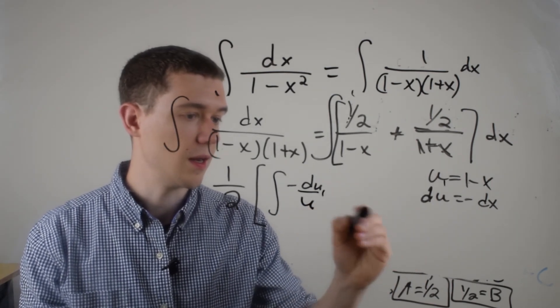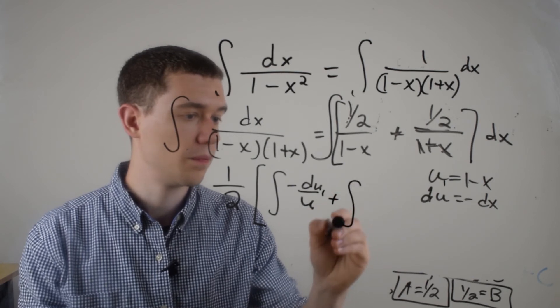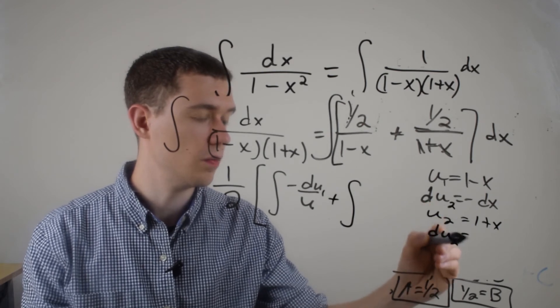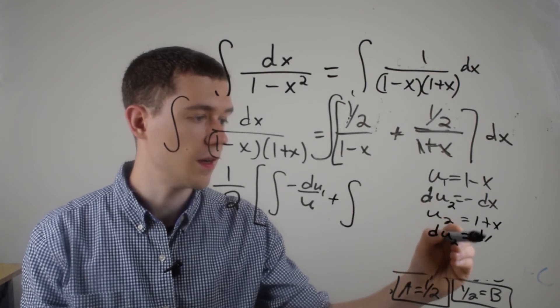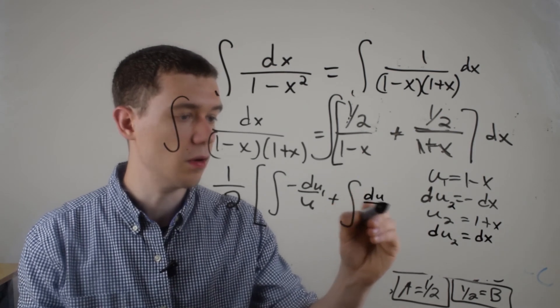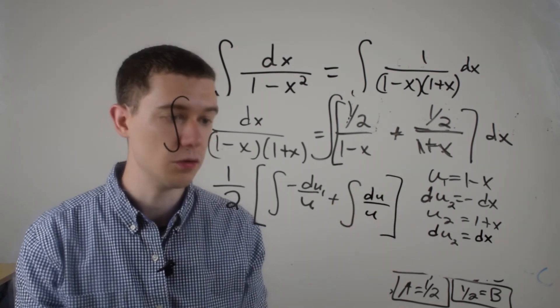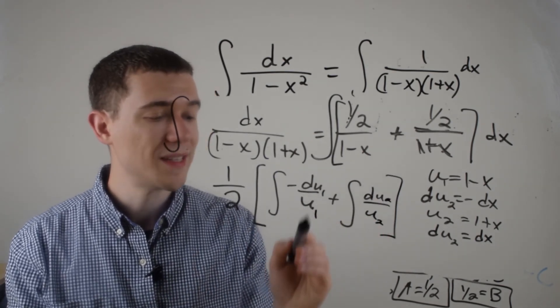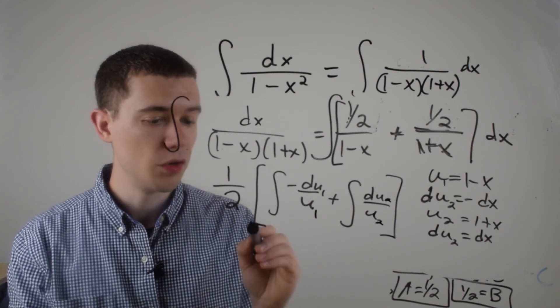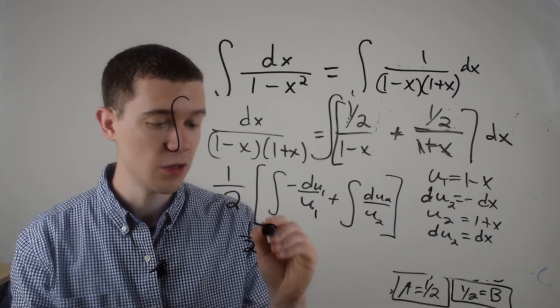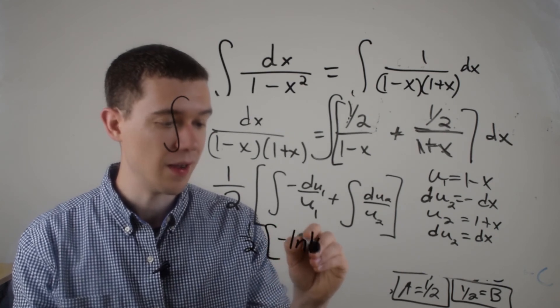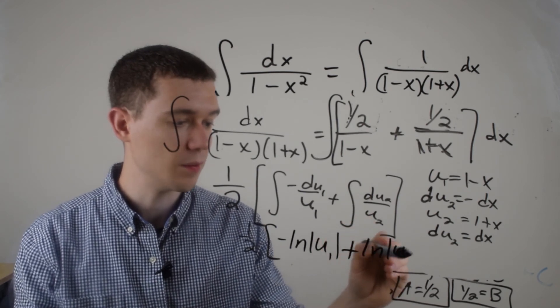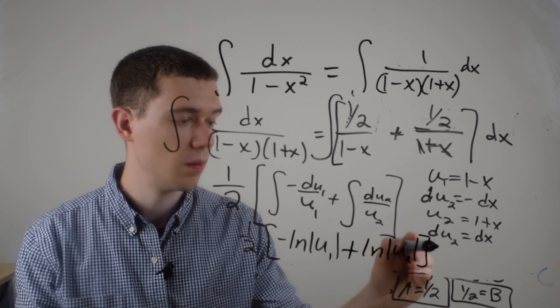And likewise, if I made a second U substitution, I'll call this U1 and U2. I'll let U2 be 1 plus X and DU2 would be just DX. I'm just going to get DU over U. So you should be pretty familiar with these sort of U substitutions. And then, what's the antiderivative of 1 over U? Well, it's natural log absolute value of U. So, this is minus LN absolute value of U. And the same thing here. This will be plus LN absolute value of U plus C.